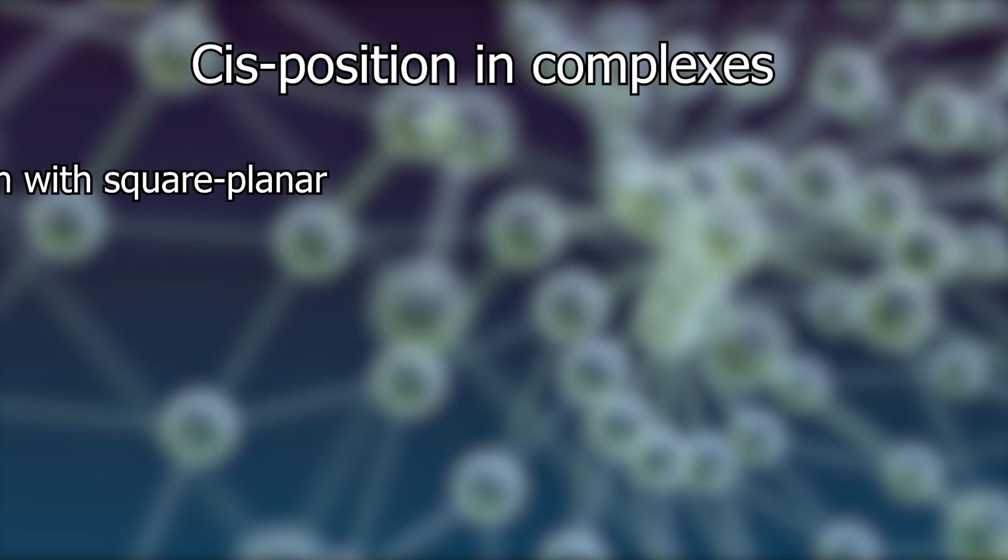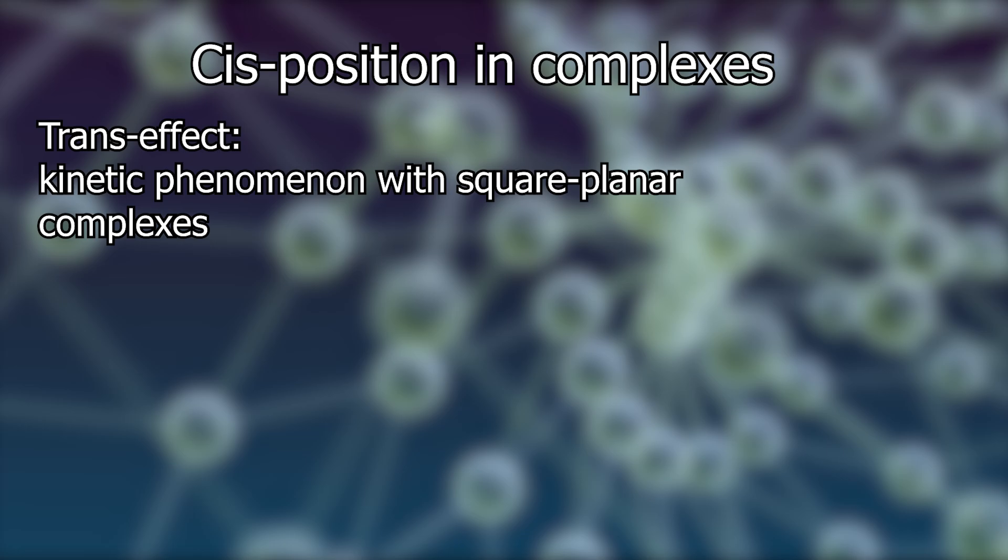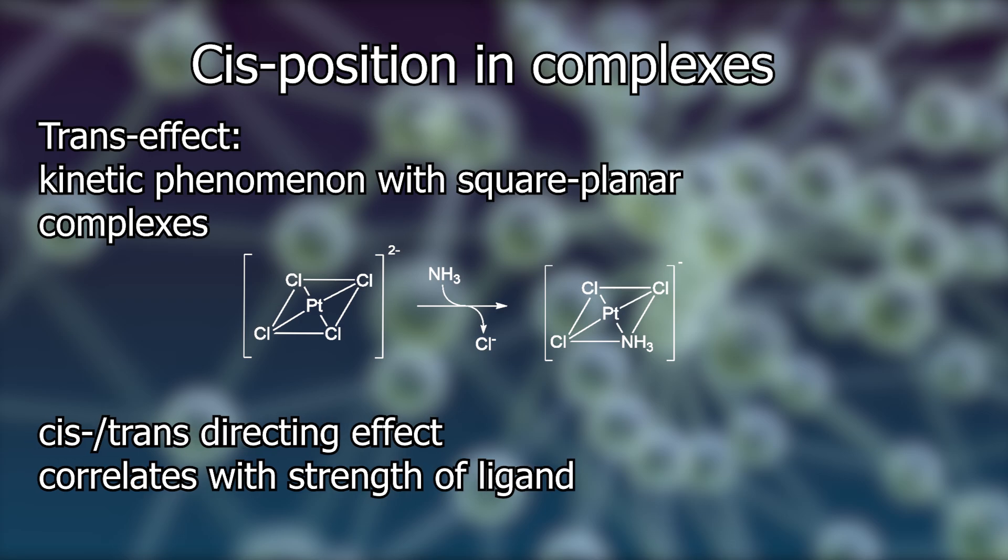The synthesis of cisplatin makes use of the trans effect, which is a kinetic phenomenon in square-planar complexes. I'll explain that in a moment. When one ligand is replaced, in this case it's a chloride ligand, the second substituting ligand now has two options. It can either attack on the trans position relative to the first substituent, or it can attack in the cis position. Different ligands have varying degrees of trans-directing effects. Generally, the strength of a ligand correlates with the strength of its trans-directing property.